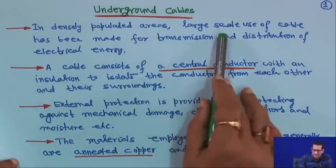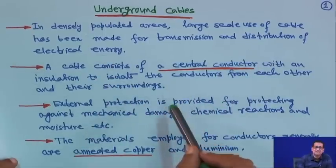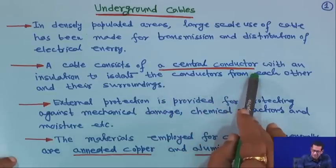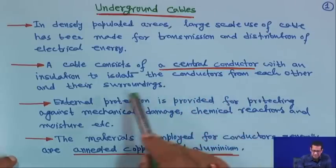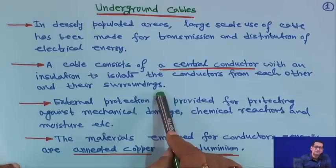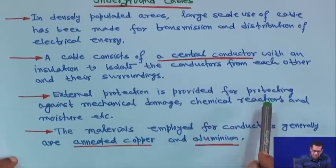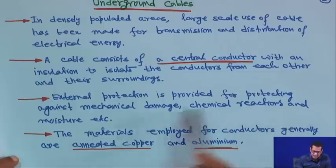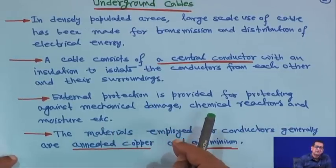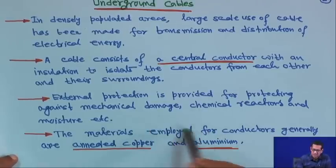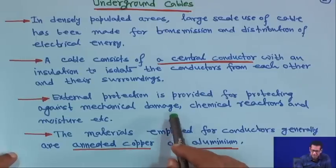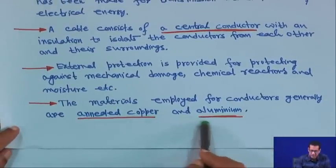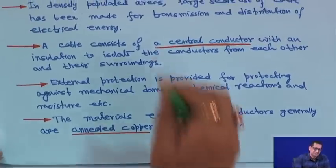In densely populated areas, large-scale use of cable has been made for transmission and distribution of electrical energy. A cable consists of a central conductor with insulation to isolate the conductors from each other and their surroundings. External protection is provided against mechanical damage, chemical reactions, and moisture, because cables in most cases will be buried in the ground.